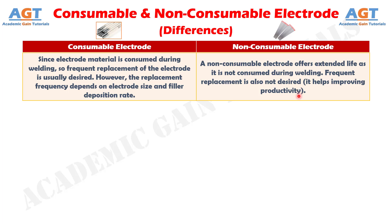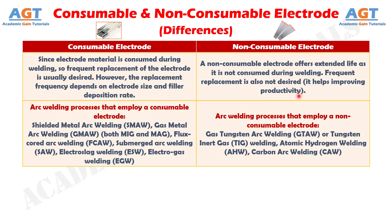It helps improving productivity. And Difference Number 7: Arc welding processes that employ a consumable electrode include shielded metal arc welding, gas metal arc welding involving both MIG and MAG welding,